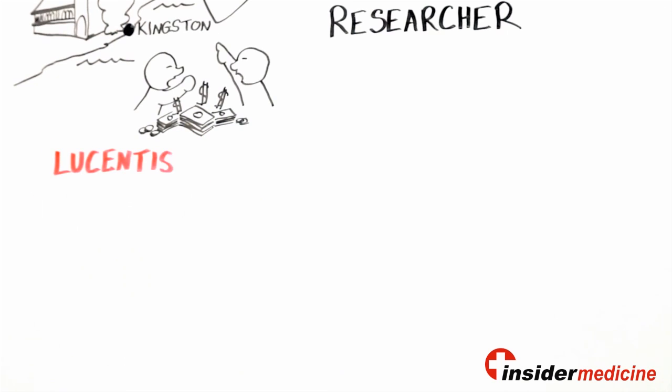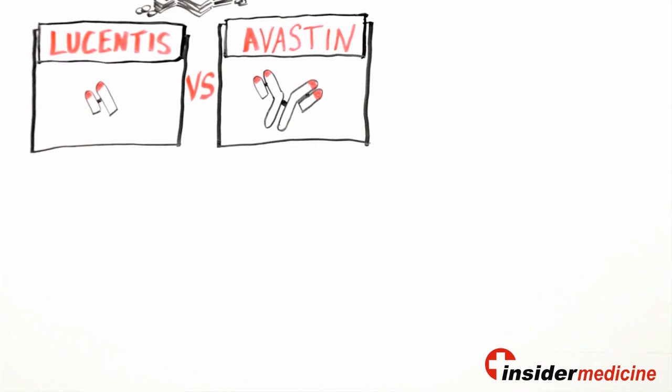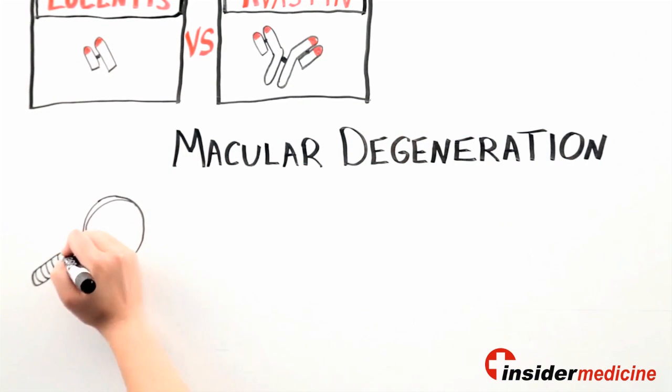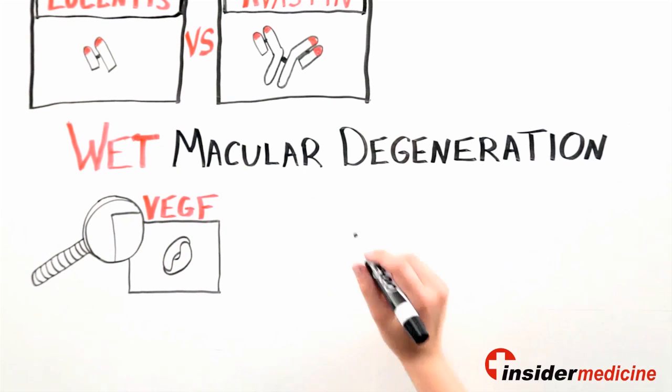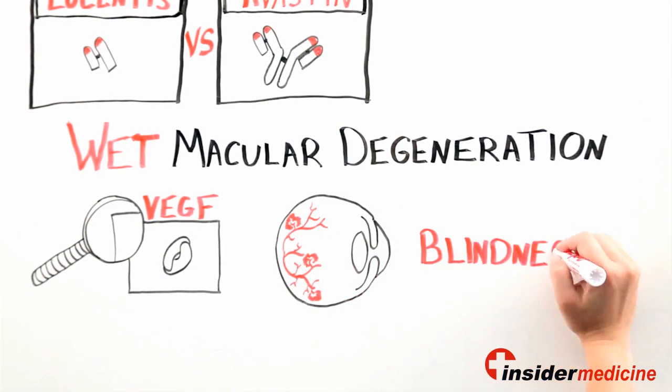The issues surround the use of two drugs called Lucentis and Avastin that are used to treat one type of age-related macular degeneration. About 15 years ago, scientists discovered that a molecule called VEGF played a key role in the development of an aggressive form called wet macular degeneration by promoting the creation of new blood vessels that can suddenly bleed, causing blindness.